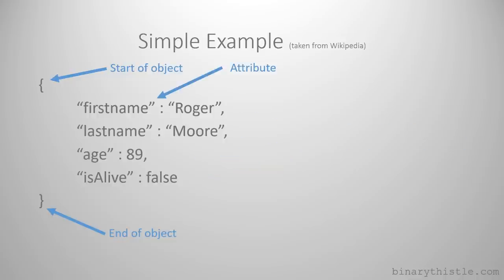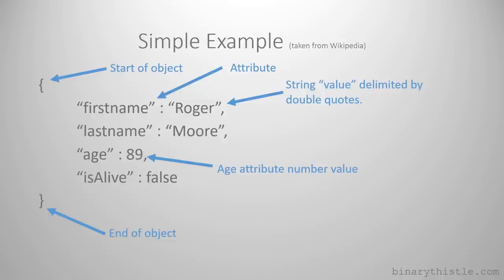First name is delineated by double quotes as an attribute, and the value in this case is Roger - it's a string value, delimited by double quotes. Same with last name. Age is a number, so Roger was 89 when he passed away, and as it's a number it doesn't require double quotes. And then finally a boolean value, which can take true or false, representing whether he is alive or not - and unfortunately he is not.